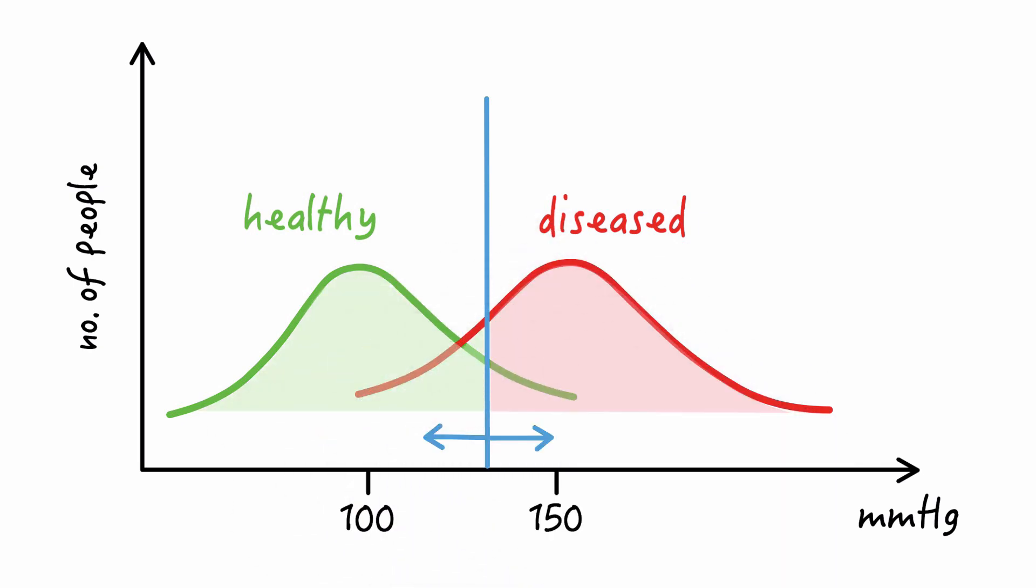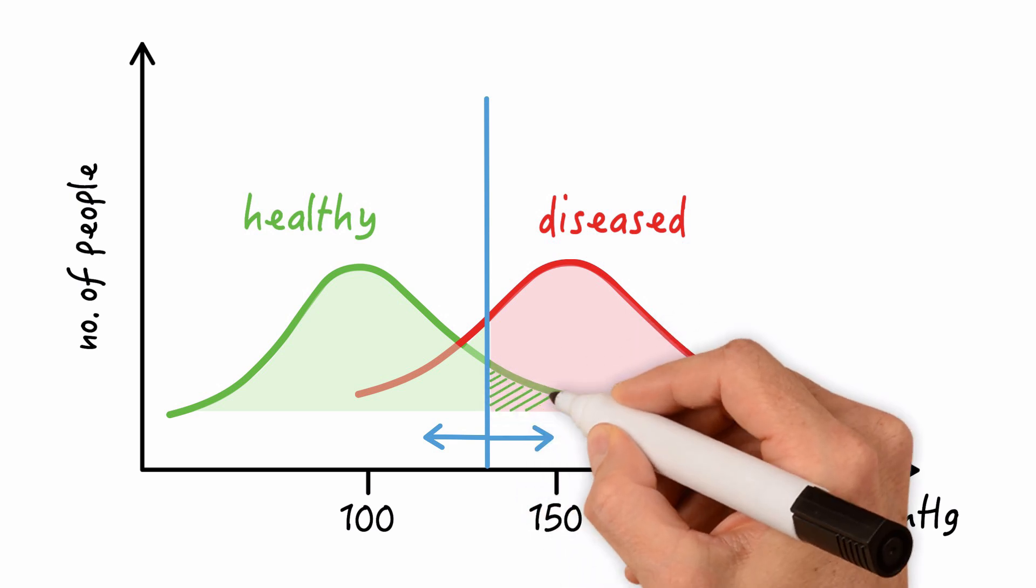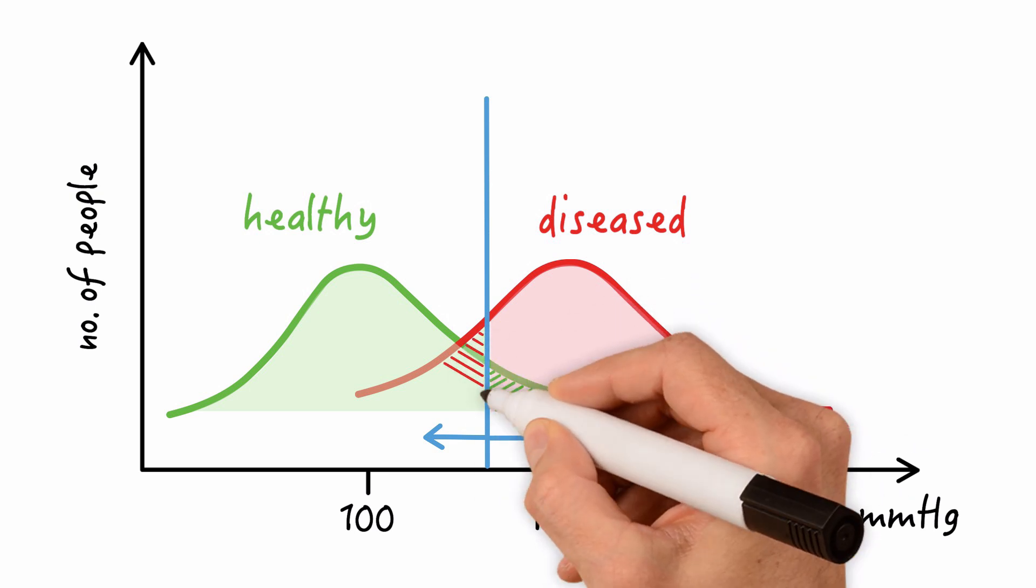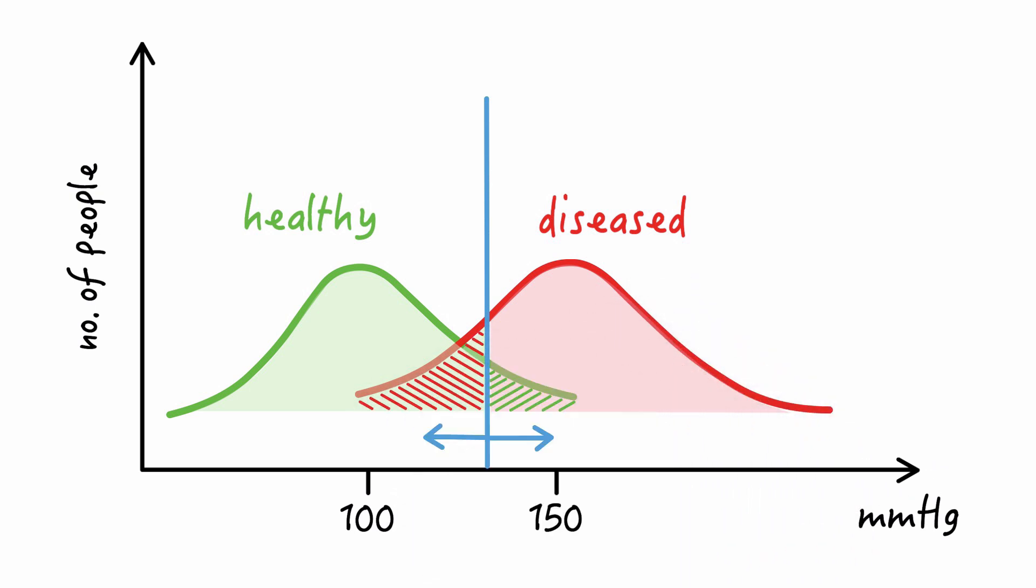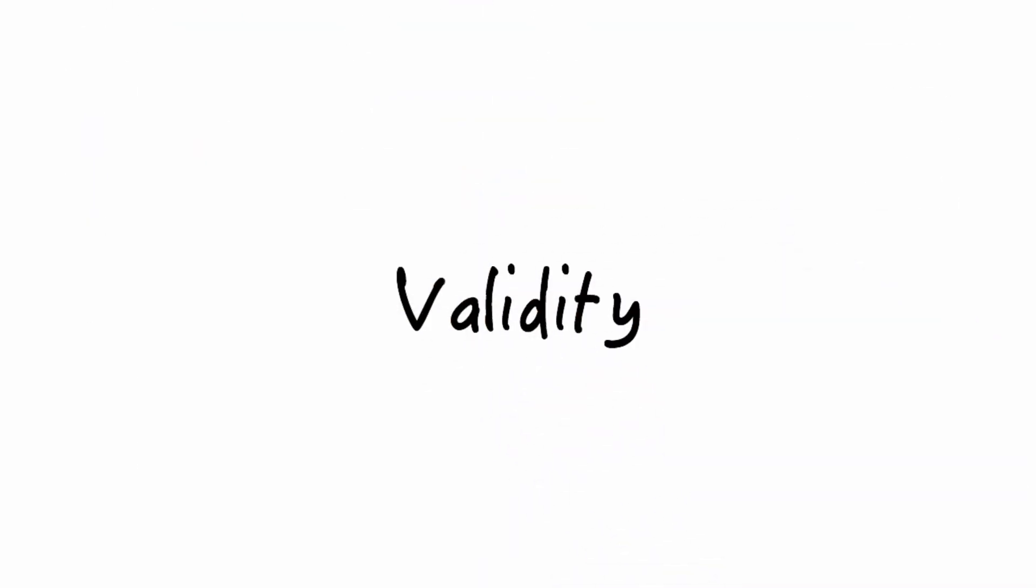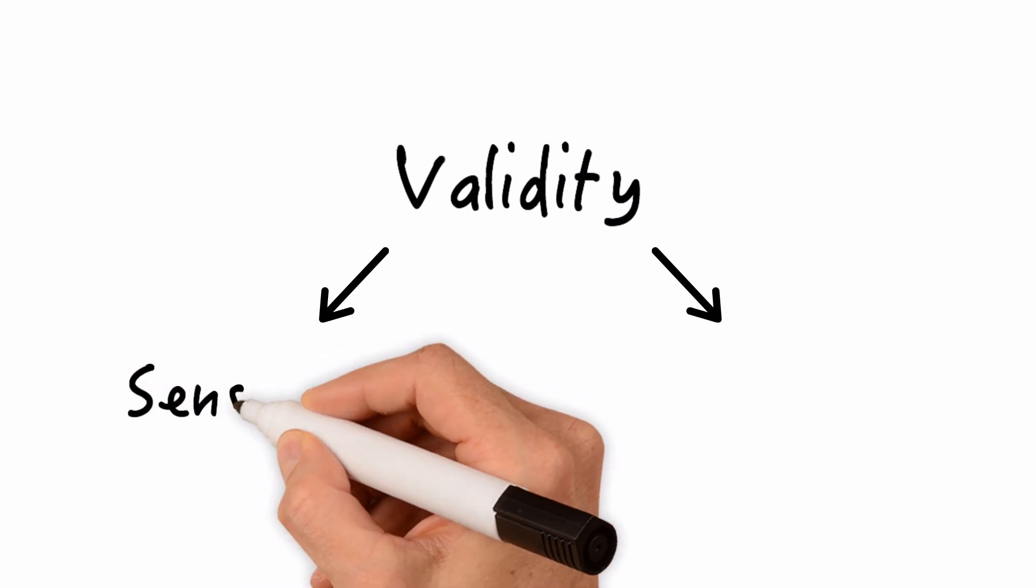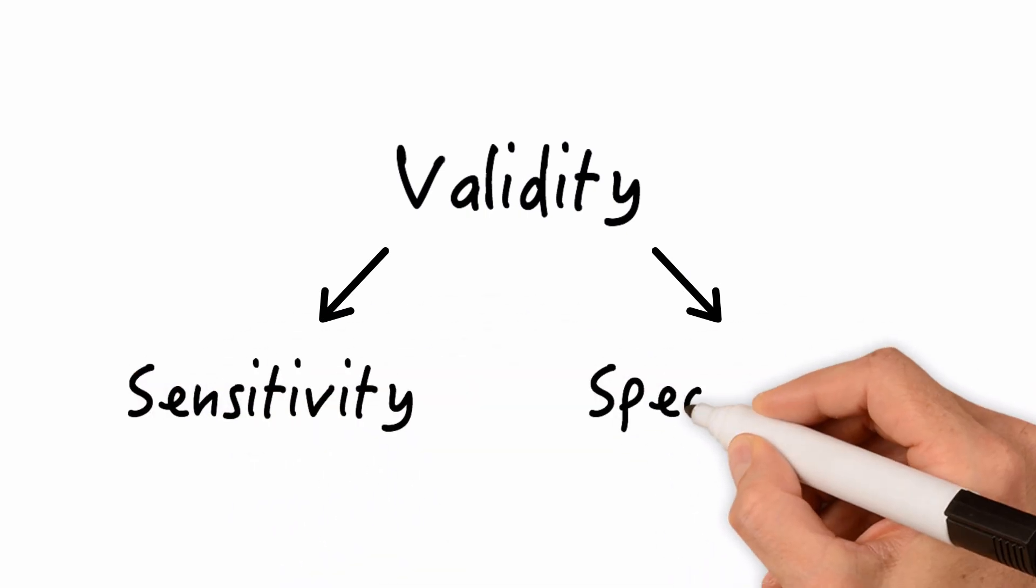Where we choose the threshold makes a huge difference. If the threshold is too low, many healthy individuals will be falsely classified as diseased. If it's too high, many diseased individuals will be falsely classified as healthy. If a test is able to classify a large proportion of diseased and non-diseased correctly, it is said to have a high validity. Test validity has two major components: one is sensitivity and the other one is specificity. These are quality criteria for the test.